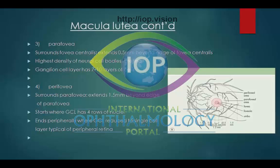The perifovea surrounds the parafovea and extends 1.5 mm beyond the edge of the parafovea. The perifovea starts where the ganglion cell layer has four rows of nuclei, and ends peripherally where the ganglion cell layer is reduced to a single cell layer, which is typical of the peripheral retina.